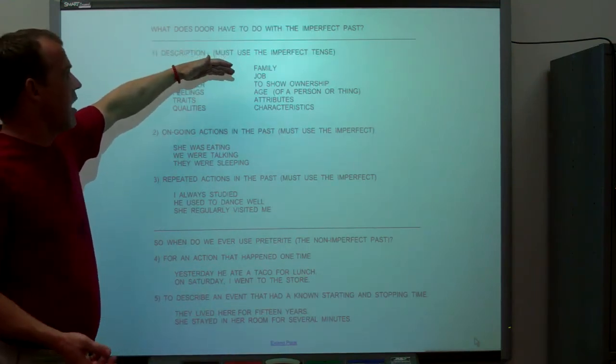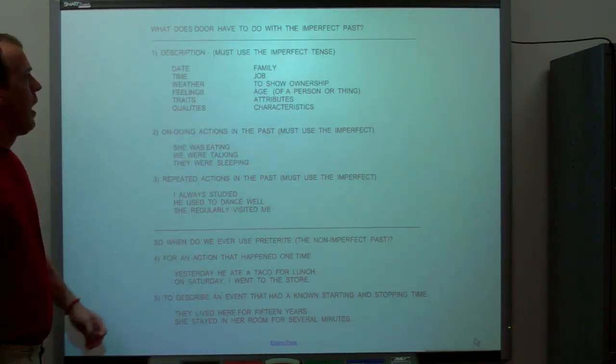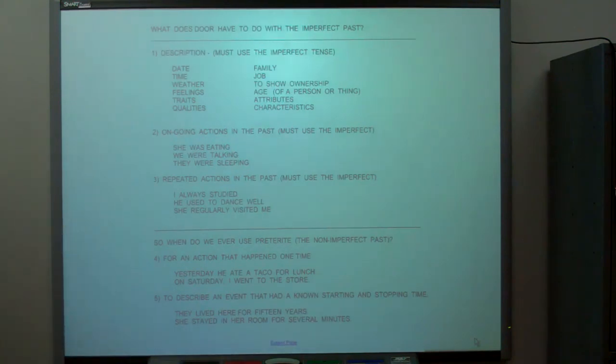Family, he was my brother. Your job, to show ownership. It was Bob's car. Age, she was 15 years old. All of these are imperfect.